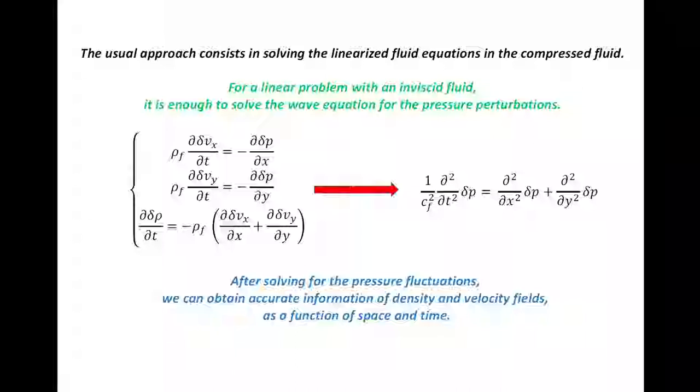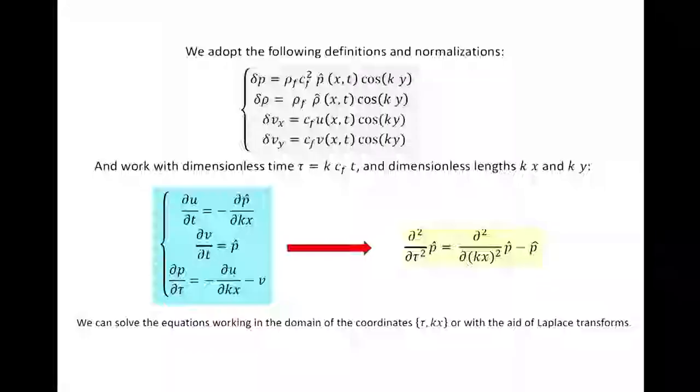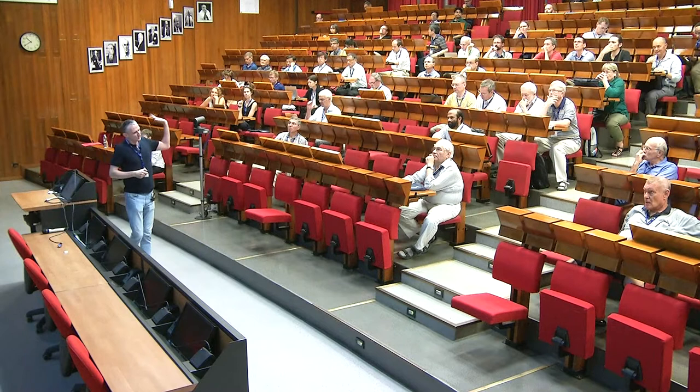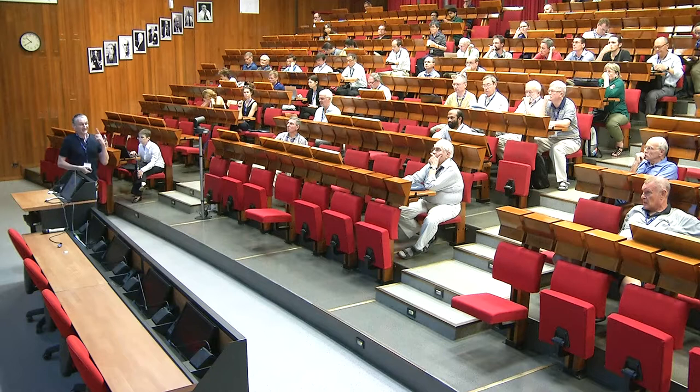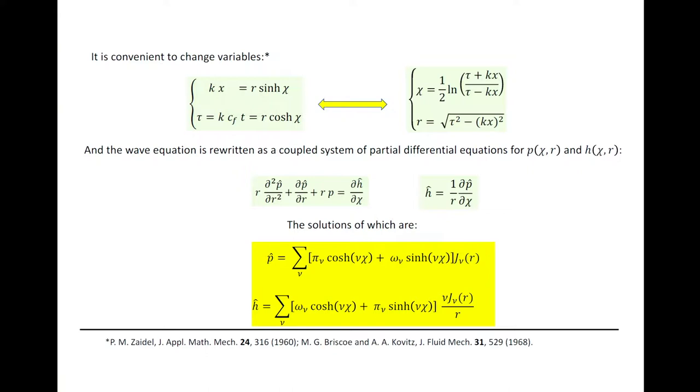The usual approach is writing the fluid perturbations, the fluid equations, perturbing them, obtaining the wave equation. Laplacian pressure equals the second derivative of pressure. This is the scalings of the adimensionalizations, of the normalizations of the different quantities. Along the history there were several ways of dealing with this analytically. Fraley was probably the first one to deal with this and solved this equation with Laplace transforms in Cartesian coordinates. But the system of equations that results at the end is really horrible and very difficult to understand the algebra.